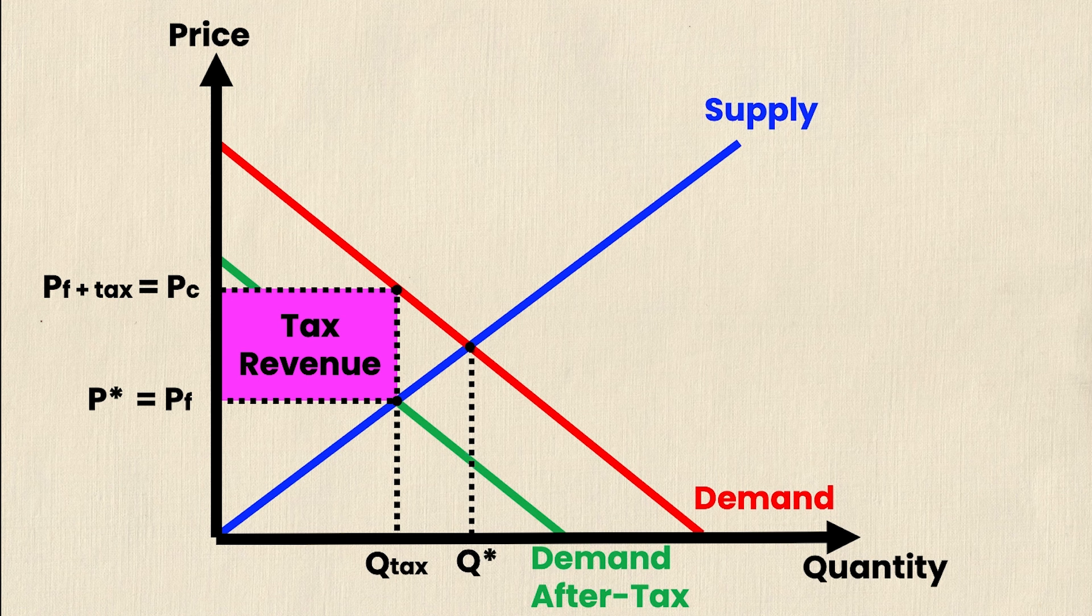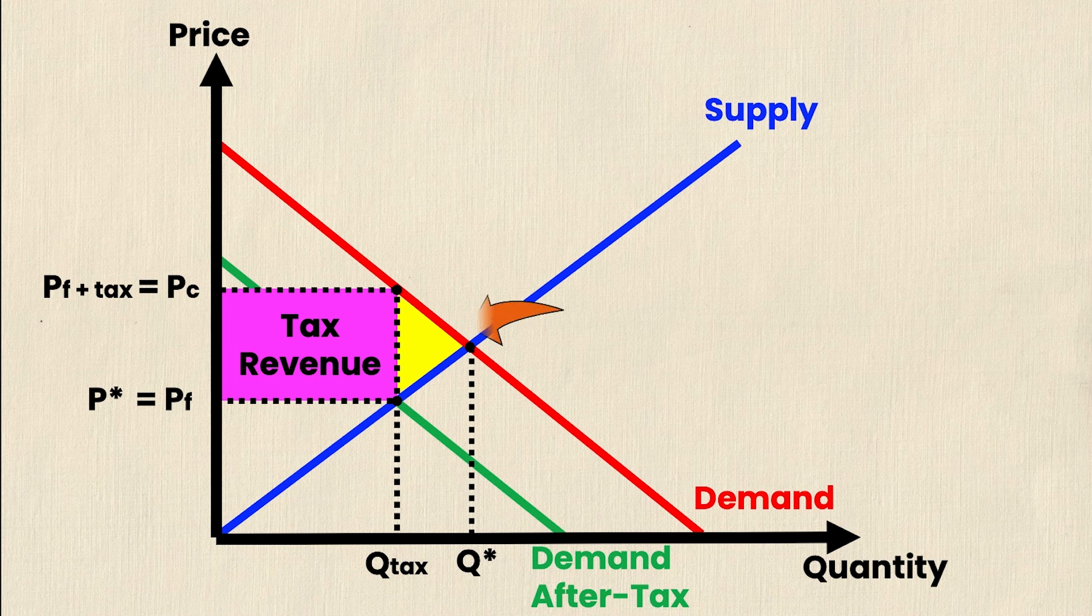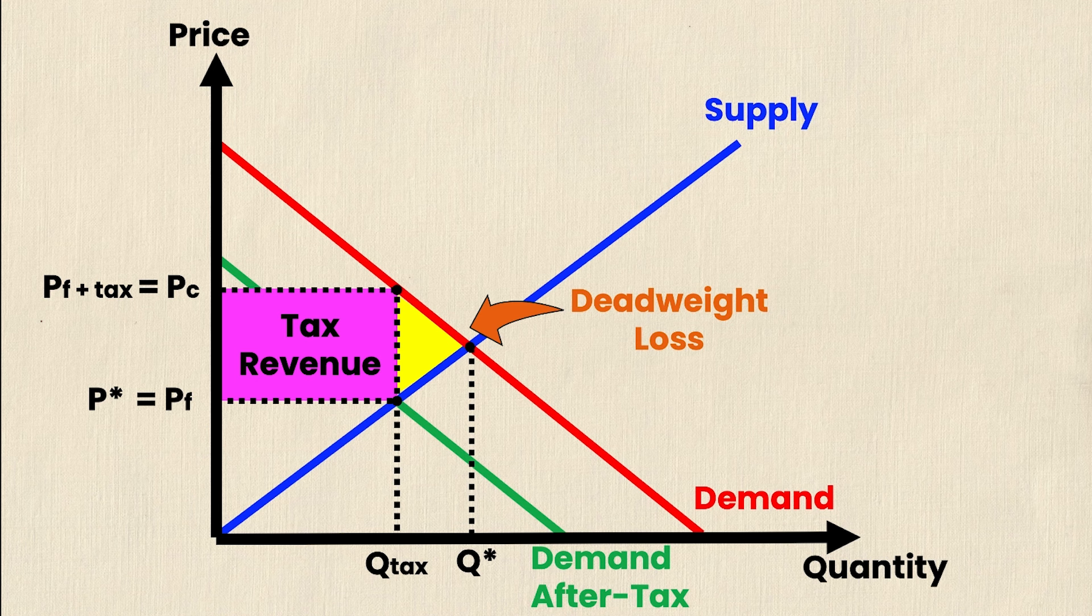Now you'll notice that Q tax is strictly less than Q star. And in this case, we're of course going to have some deadweight loss. That's going to be represented by this yellow triangle right here. And this will always be the case anytime that we're in disequilibrium, where we're not consuming at Q star, a deadweight loss will always occur. And in this case, it's this little yellow triangle right here.